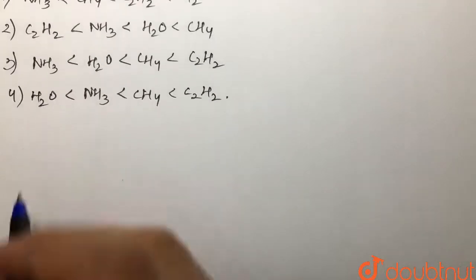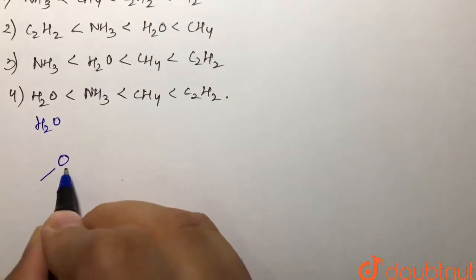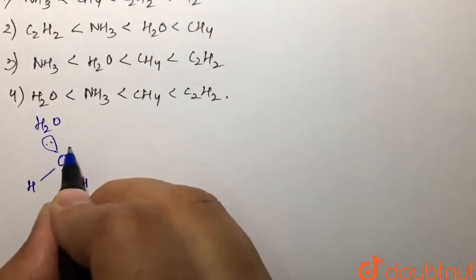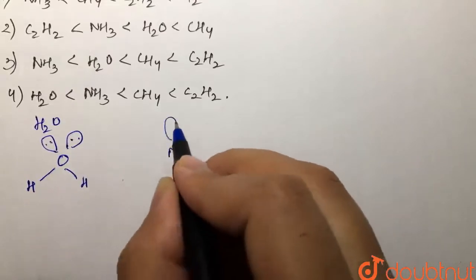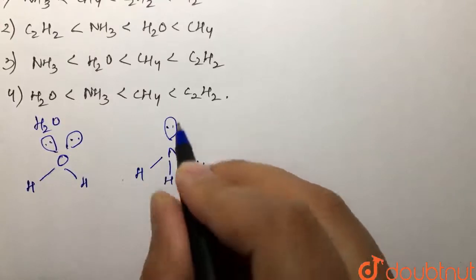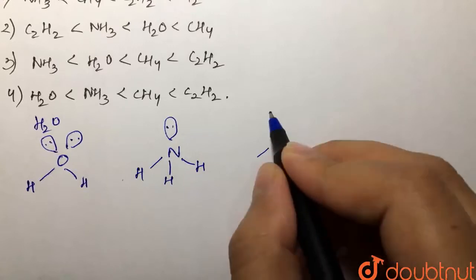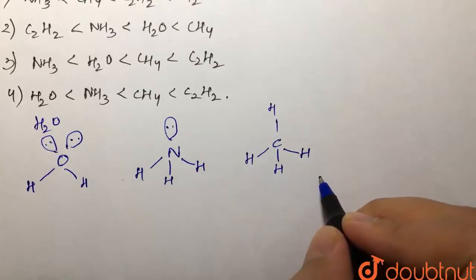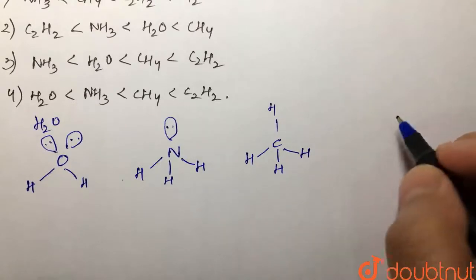First we have water — oxygen has six valence electrons with two lone pairs and two bond pairs. Then we have ammonia, with one lone pair because nitrogen has five valence electrons, making three bond pairs and one lone pair. Then we have methane, which is a proper tetrahedral — it makes four bonds with hydrogen and has no lone pairs, since carbon has four valence electrons.